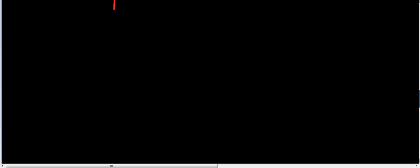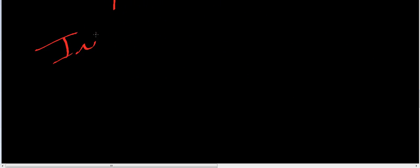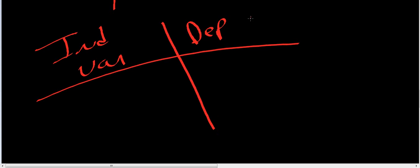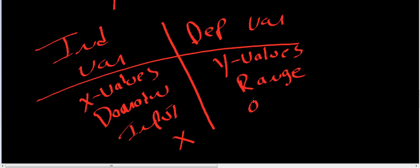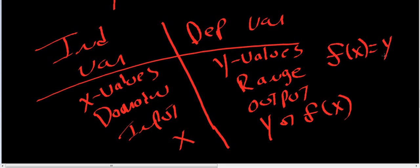So, we're going to wrap it up in a little table here. Your independent variable, your dependent. Your independent variable, that's going to be your X values, also your domain. That's your input. And it's your X from your ordered pair. Your dependent variable, that's your Y values. That's your range. That's your output. And it's either going to be Y or f of X. And you'll find out later that f of X is equal to Y.